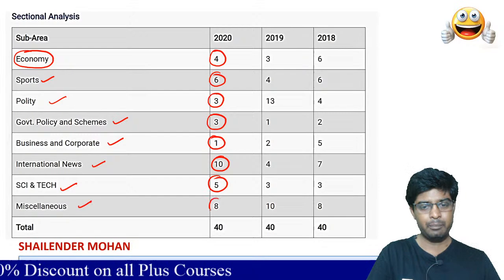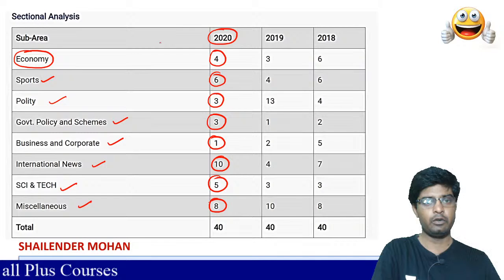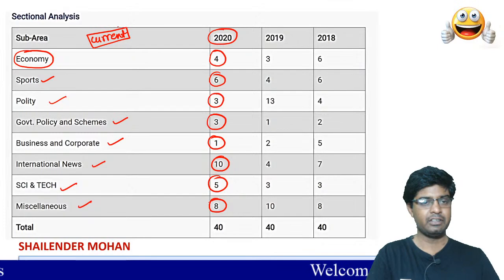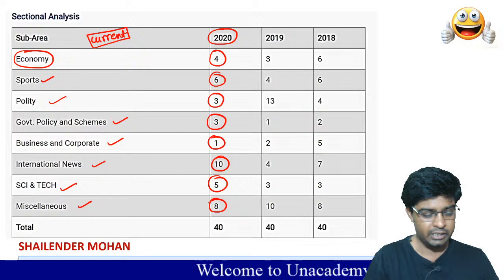Miscellaneous or conventional GK — what you call static GK — contributed 8 questions. So basically what you have to understand is you must pay very much attention to current affairs. Whatever has happened in the past 6-7 months in current affairs, you should know all of it.